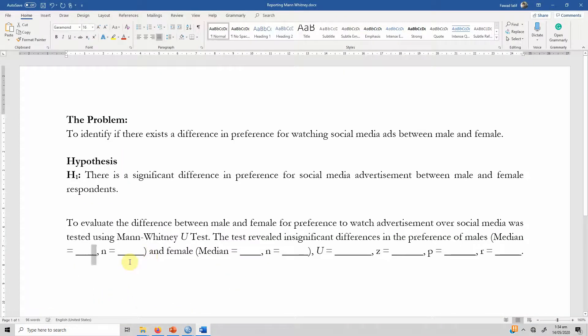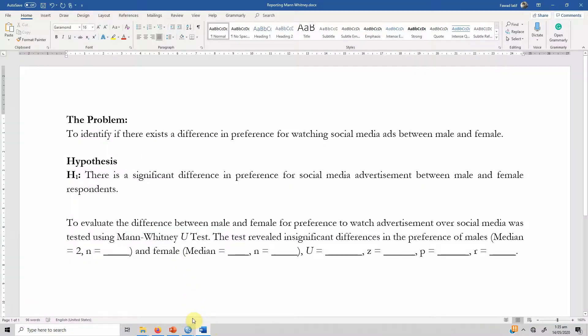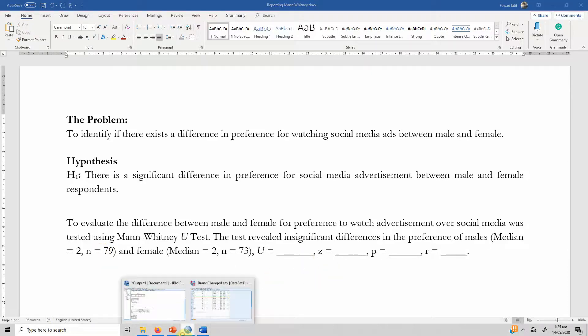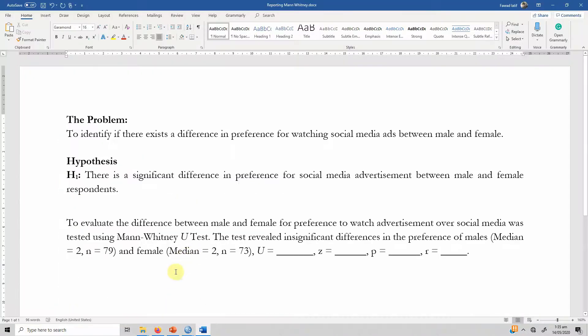Press OK and the median value for both male and female is 2. We go back here and we write 2 for males. What is the n value for males? The n value for male is 79 while for female is 73. Male is 79, female 73 while the median is 2. It requires U-Statistic, Z and P value. We can just copy this table so we do not have to move between windows.